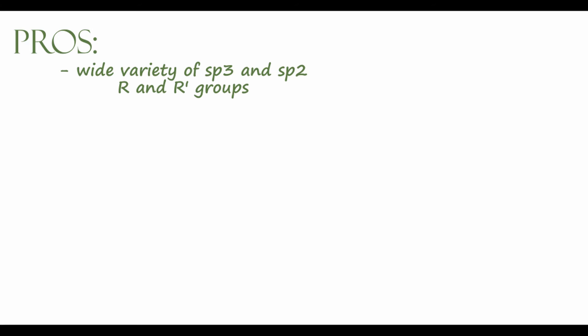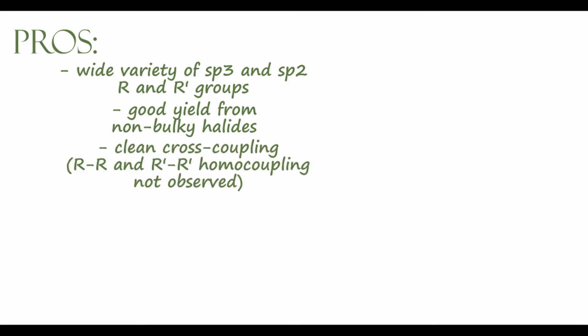Let's talk about the pros and cons of the Corey-House synthesis. On the pros side, we can use a wide variety of substrates — really any sp3 or sp2 hybridized carbon reagent. Aryl and alkenyl reagents don't readily participate in nucleophilic substitutions, but we can get very good yields with these sp2 hybridized carbons using the Corey-House synthesis. We can also get good yields with non-bulky alkyl halides. Finally, with organocuprate species, homocoupling doesn't really occur, so we get a very clean cross-coupling reaction with few side reactions.